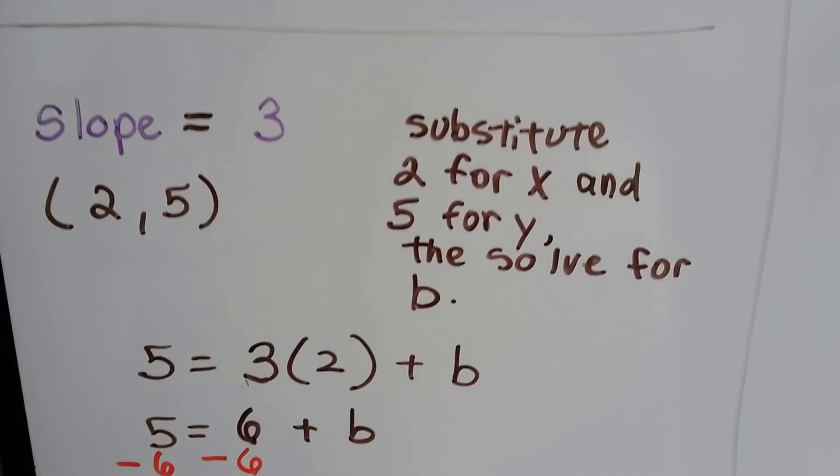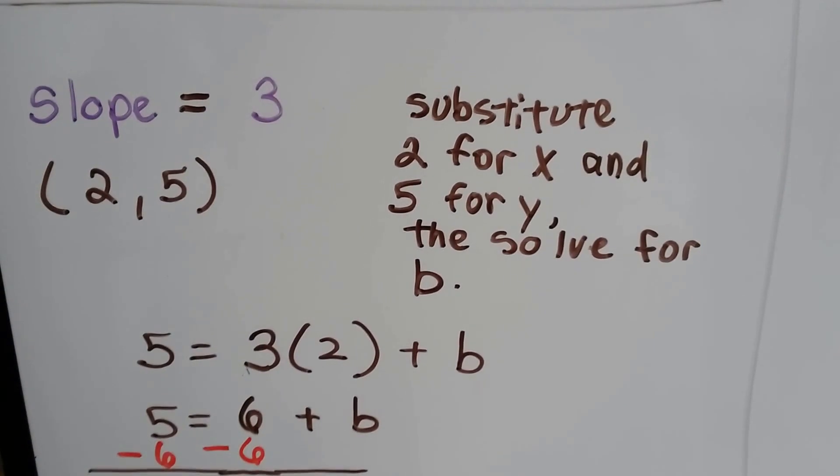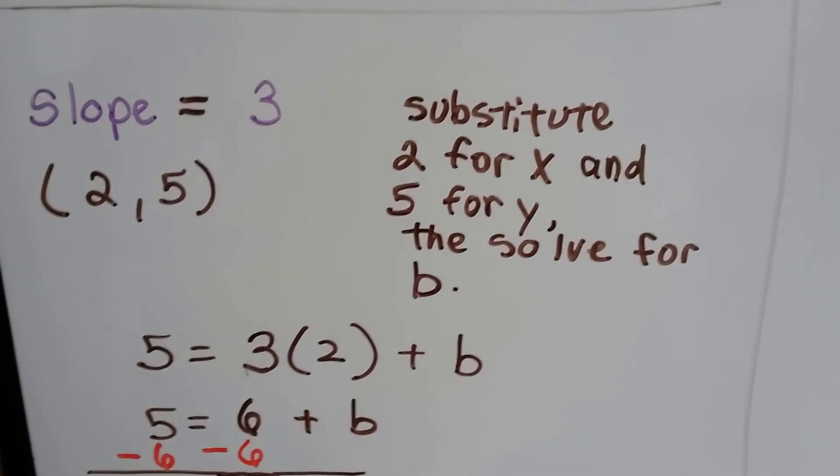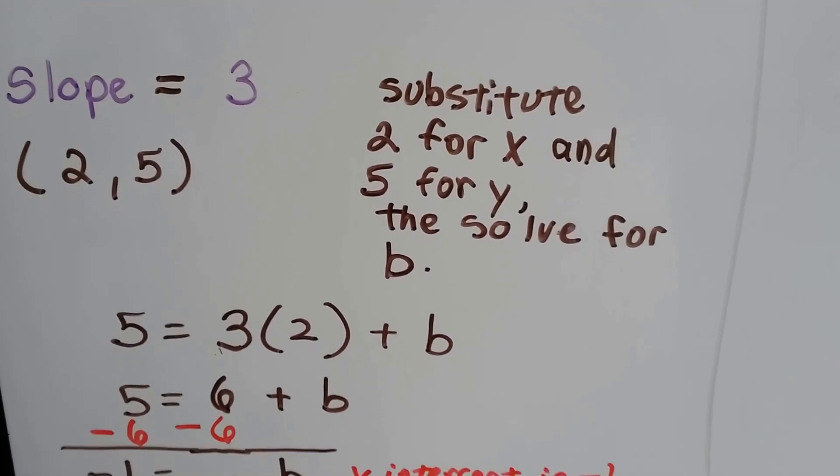How about this one? Now we've got the slope and we've got an ordered pair. All we have to do is substitute the 2 for x, because that's the x value, and the 5 for the y, because that's the y value, and then solve for b.